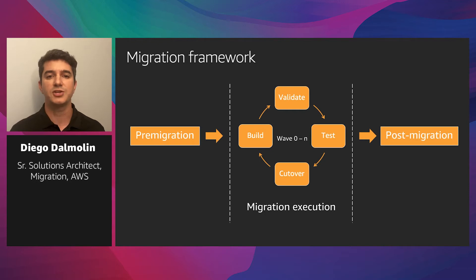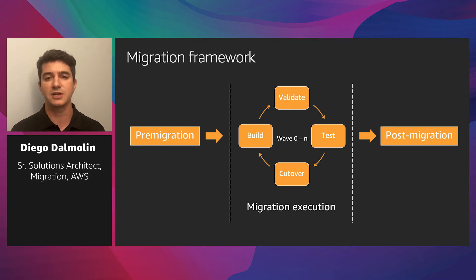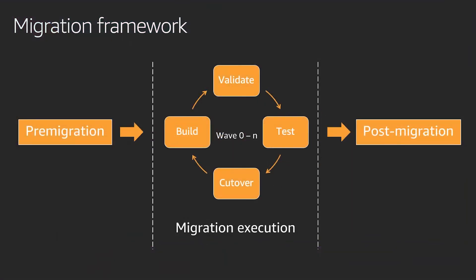Then we start the migration execution phase. It's when you apply the migration strategy defined in the first phase by building a migration pipeline, validating the assumptions, testing the application running in the new environment, and finally cutting over the migration. The lessons learned during the first migration waves will be used to improve the process and keep the migration momentum. Finally, there are some post-migration activities such as notifying users and application owners, or installing new tools to support the cloud environment.